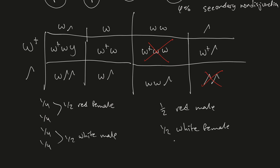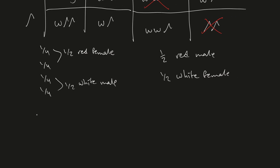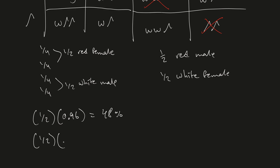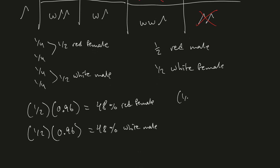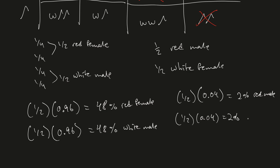To figure out the true percentages, we multiply each outcome by its probability. Red female (one-half) × 96% chance of regular disjunction = 48% chance of a red female. White male (one-half) × 96% = 48% chance of a white-eyed male. For secondary non-disjunction: red male (one-half) × 4% = 2% chance of a red male. White female (one-half) × 4% = 2% chance of a white female.